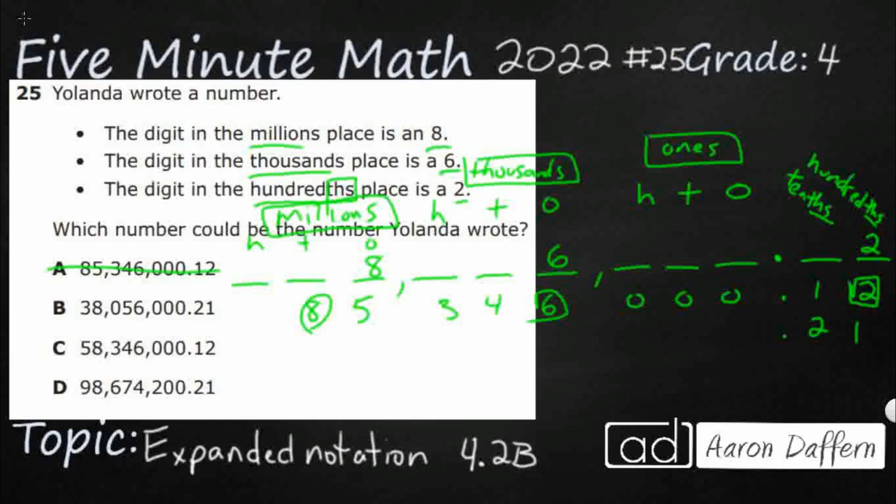I can already tell you that B is not going to work. Look, they put the 2 in the wrong spot. But we'll just double-check. I've got a 6, 5. Okay, so that 6 is good. And then 38. Yeah, that 8 is good. It's just that the 2 is in the tenths rather than the hundredths. So that's not it.